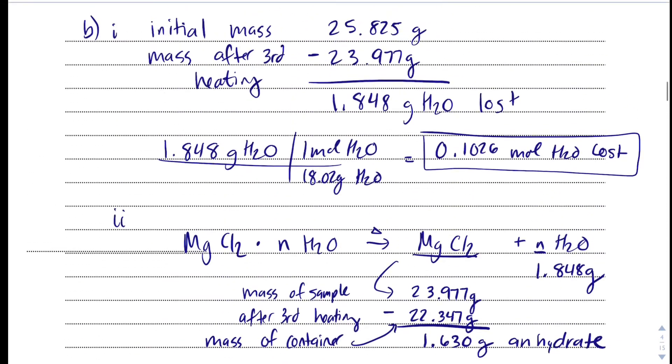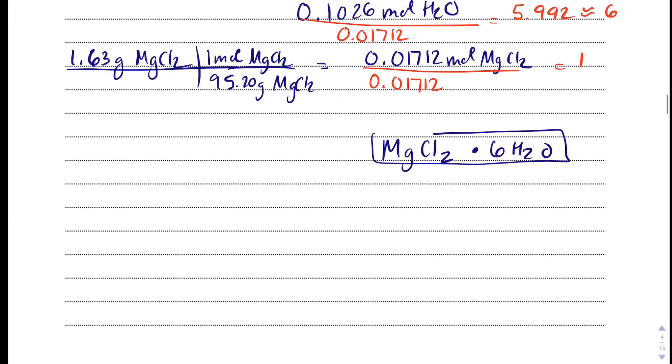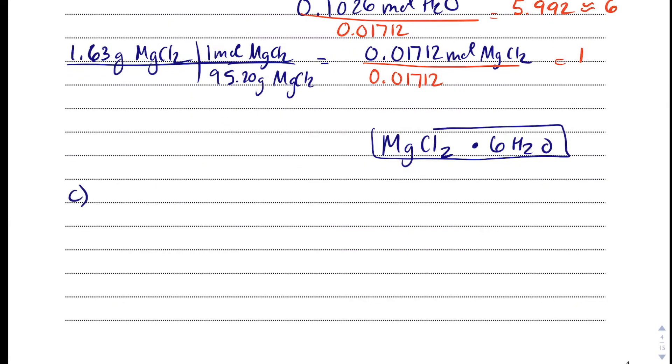Okay, now this is a long FRQ, so we're going to keep going. In Part C now, it says, a different student heats the hydrate in an uncovered crucible, and some of the solid spatters out of the crucible. This spattering will have what effect on the calculated mass of water lost? If you've done a hydrate lab, there's always, inevitably, some amount of spattering, and what the spattering does is it makes it appear, mathematically, that you have more water that's being lost than truly is.